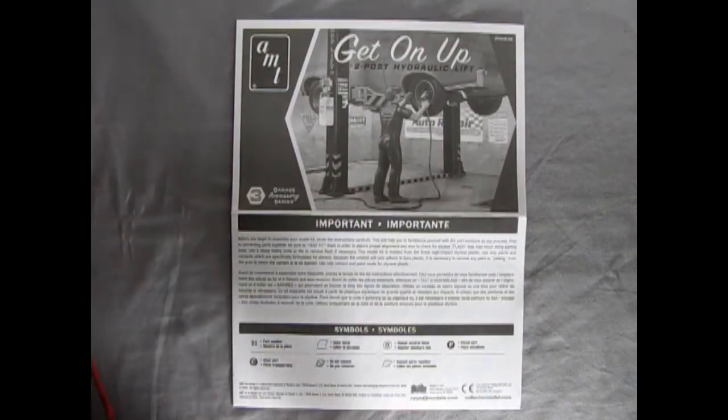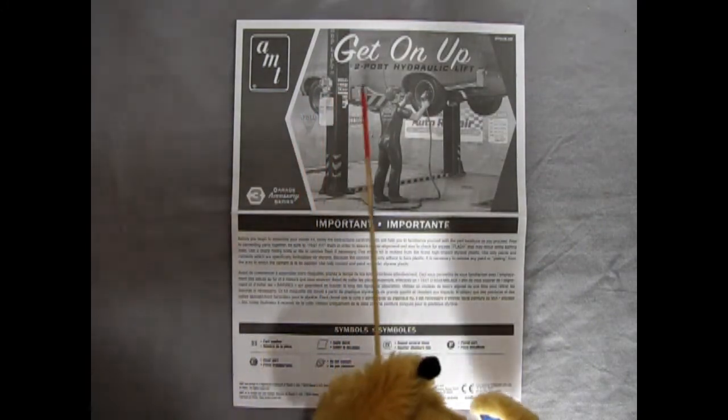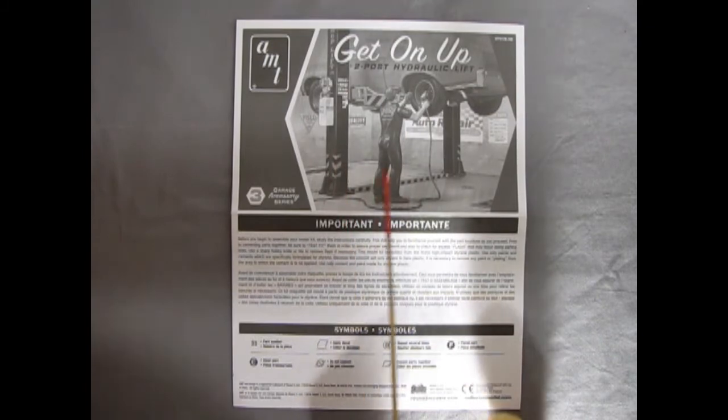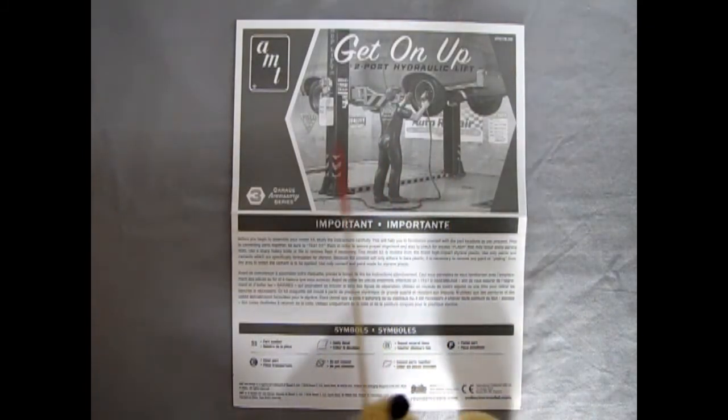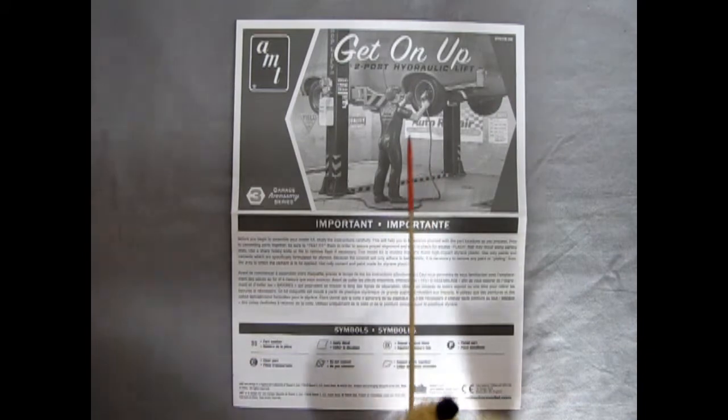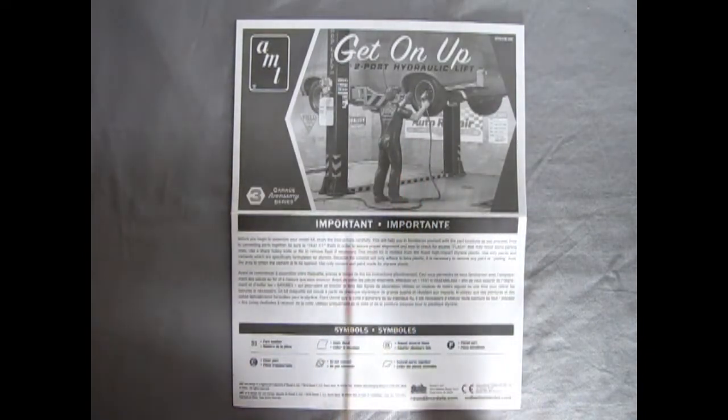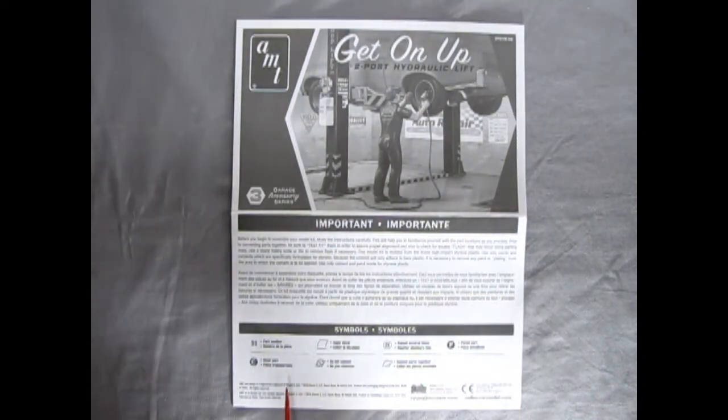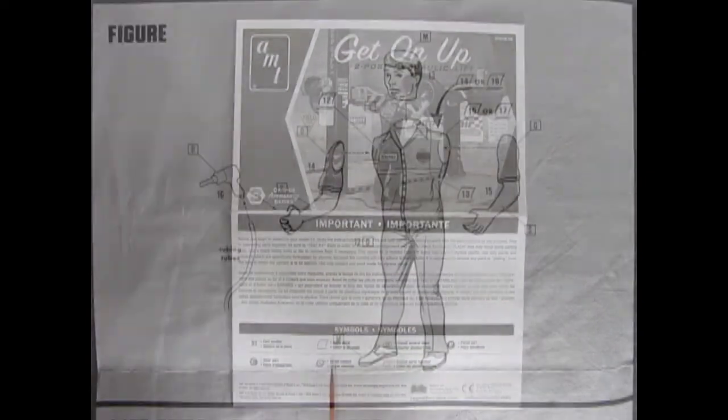Oh boy, oh boy, it's my turn again. All right, so here we go with our get-on-up instruction sheet. And as you can see, this again is a reflection of the box top, but gives you a nice idea on how to lay this thing out for your garage diorama. Here again are our important facts. And then we've got our symbols down below, which will help us guide us through this build.